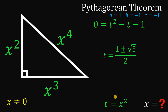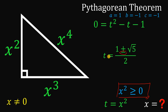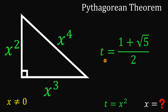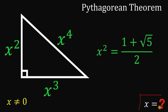Since t equals x squared, and x squared must be greater than or equal to 0, t cannot be negative. Therefore, we discard the value 1 minus square root of 5 over 2. So t must equal 1 plus square root of 5 over 2 — which is the famous golden ratio. Since t equals x squared, we replace t with x squared.